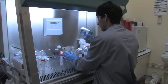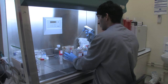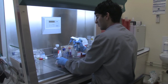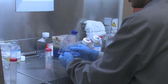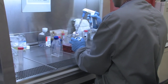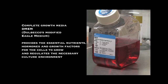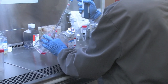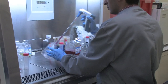Once more than 90% of the cells have detached from the bottom of the flask, they are then transferred into a sterile tube. To ensure all of the cells have been transferred, the flask is rinsed with pre-warmed complete growth media. The amount of growth media added is twice the trypsin volume used initially, and is then transferred into the same sterile tube.